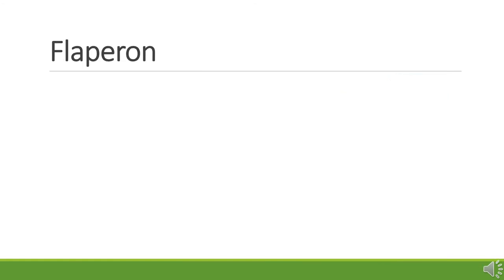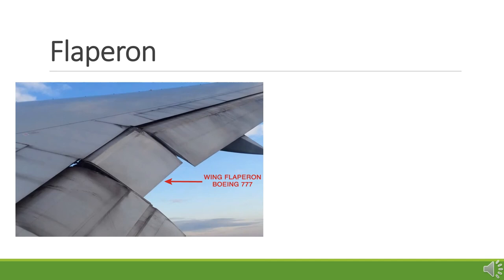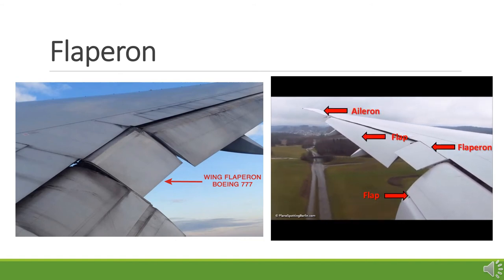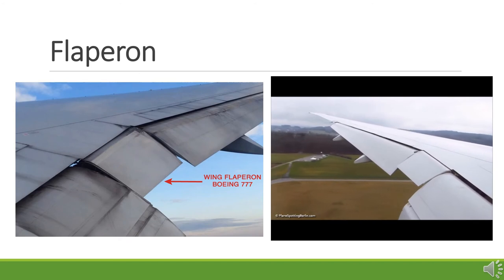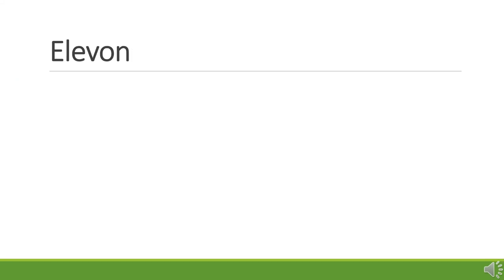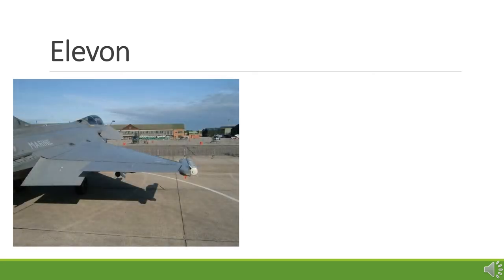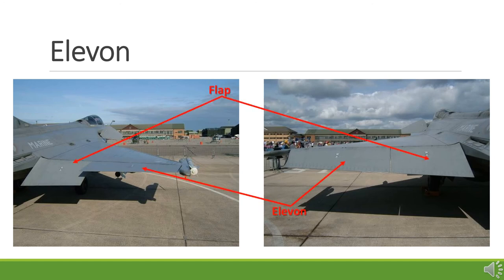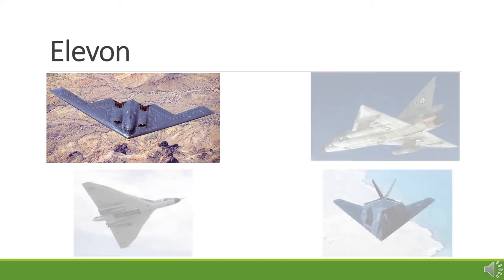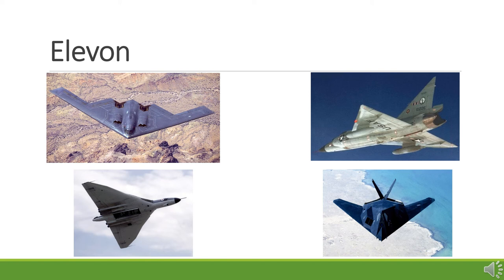A flapperon is a type of control surface that combines the functions of both flaps and ailerons. Some large commercial aircraft may have a flapperon between the flaps and ailerons. In addition to controlling the roll or bank of an aircraft as conventional ailerons do, both flapperons can be lowered together to function in the same way as a set of flaps. Elevons are aircraft control surfaces that combine the functions of the elevator, used for pitch control, and the aileron, used for roll control. They are frequently used on tailless aircraft such as flying wings or delta-winged aircraft. When moved in the same direction, elevons cause a pitching force; when moved differentially — one up and one down — they cause the aircraft to roll left or right.